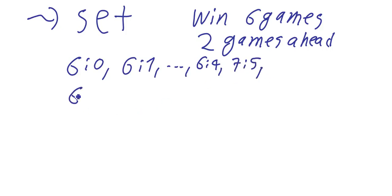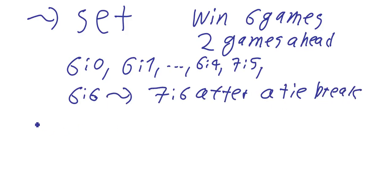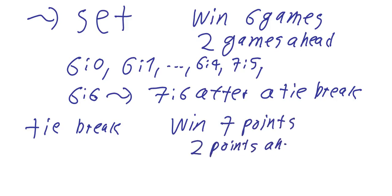But what happens if there is a 6-6? Then it won't be 8-6 but 7-6 after a tiebreak. So one side will win the tiebreak, and in the tiebreak you have to win 7 points and be 2 points ahead. So this will be played in points again.